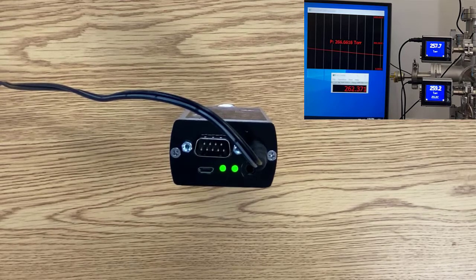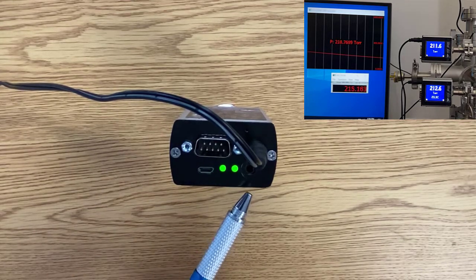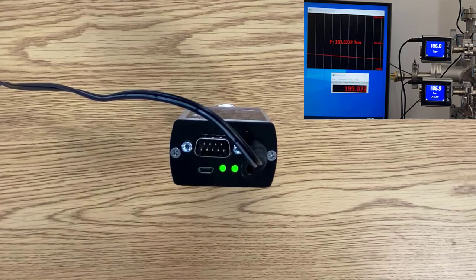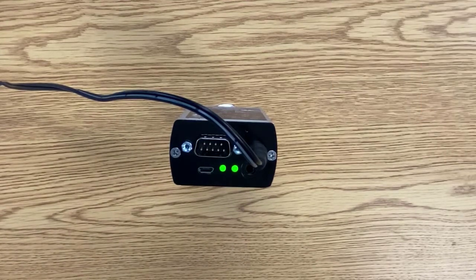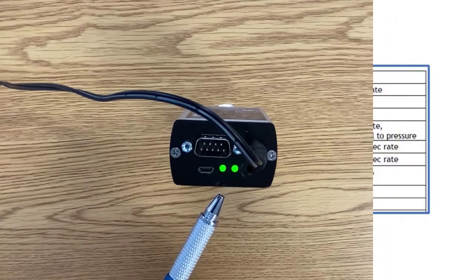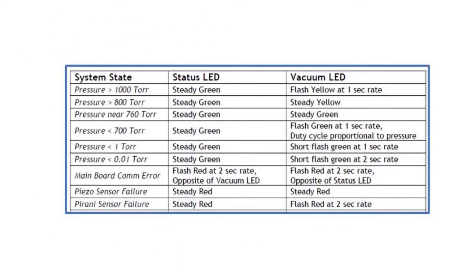In addition to the USB connection, we also have an RS-232, RS-485 port. And finally, I want to mention these two multicolored LEDs. Even if you don't order the touchscreen display, the LEDs are provided. The status LED tells the user about the health of the HVG. In short, green is good, and red indicates that the unit needs to be serviced. The vacuum LED tells the user about the pressure in the system.